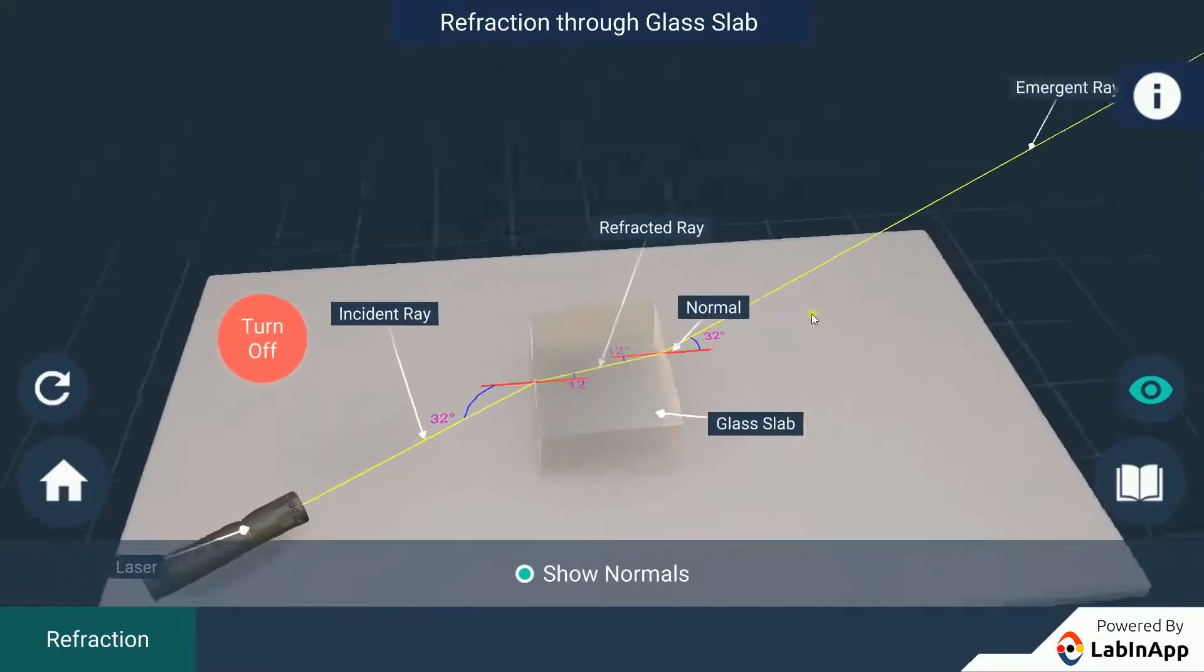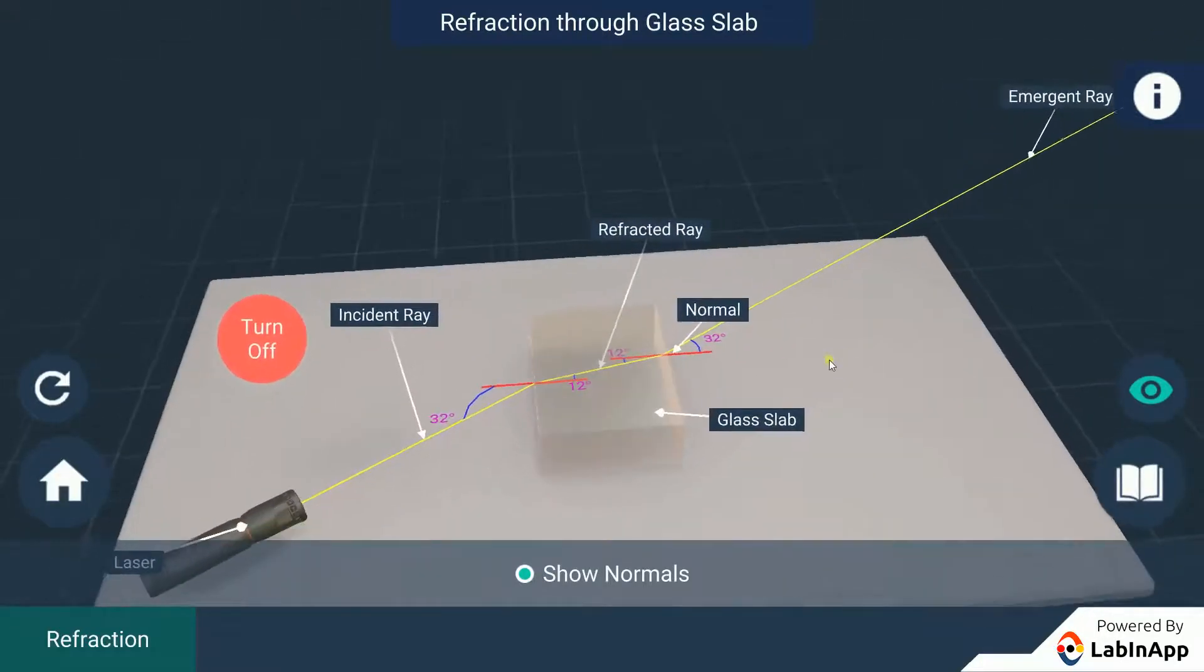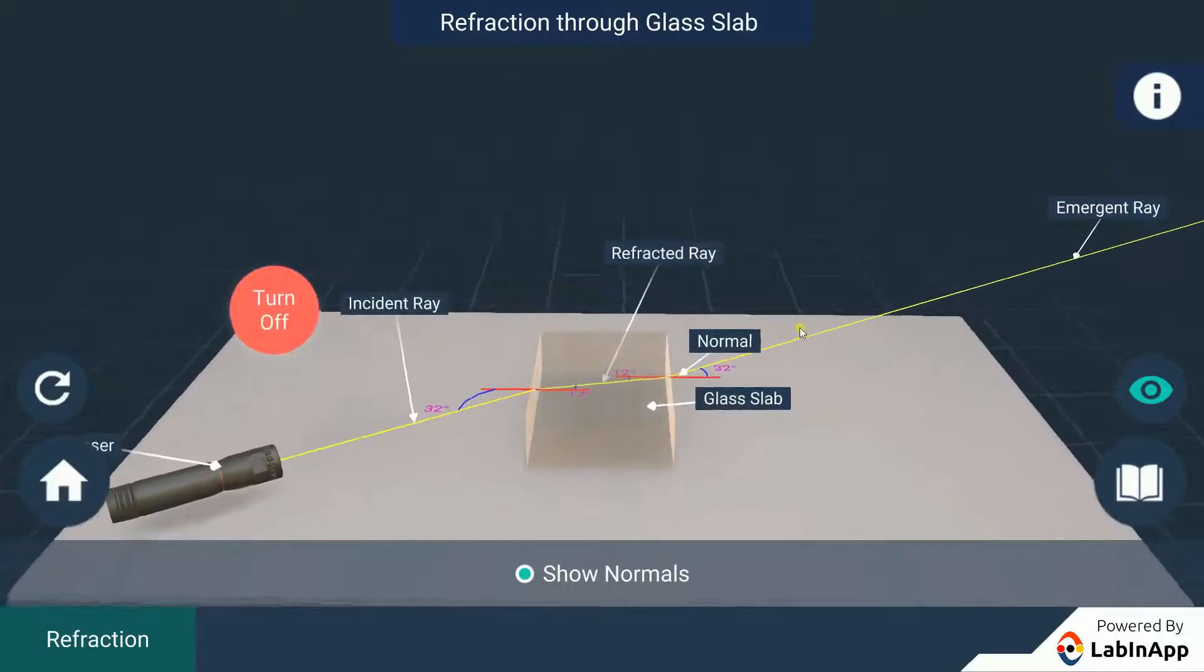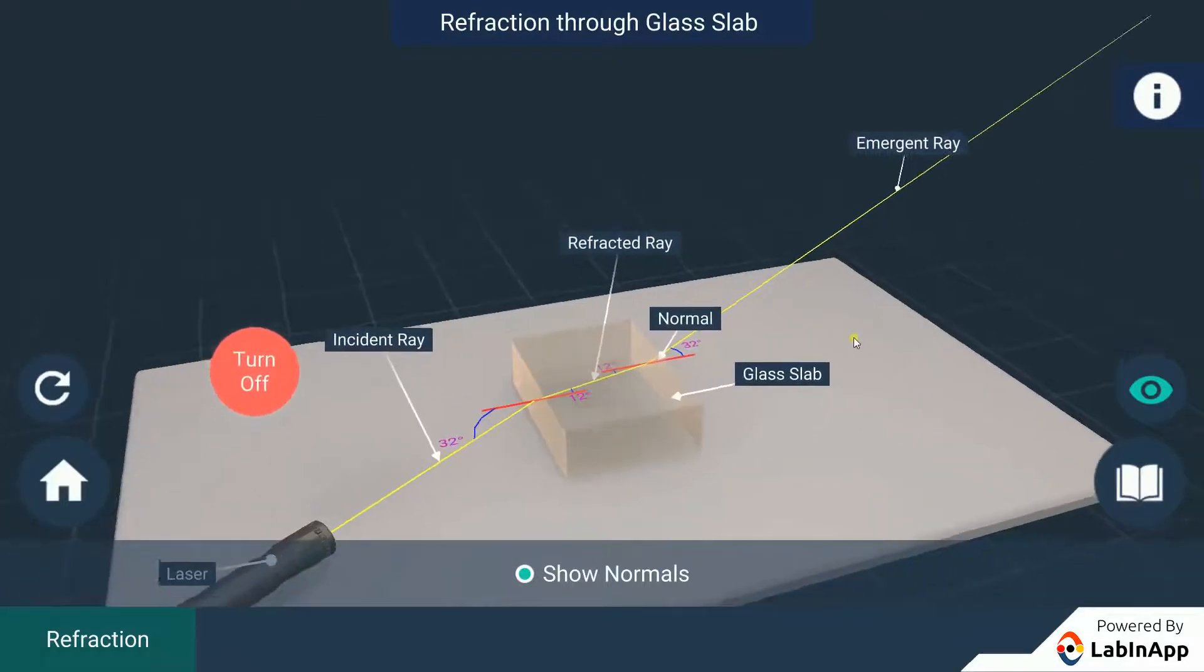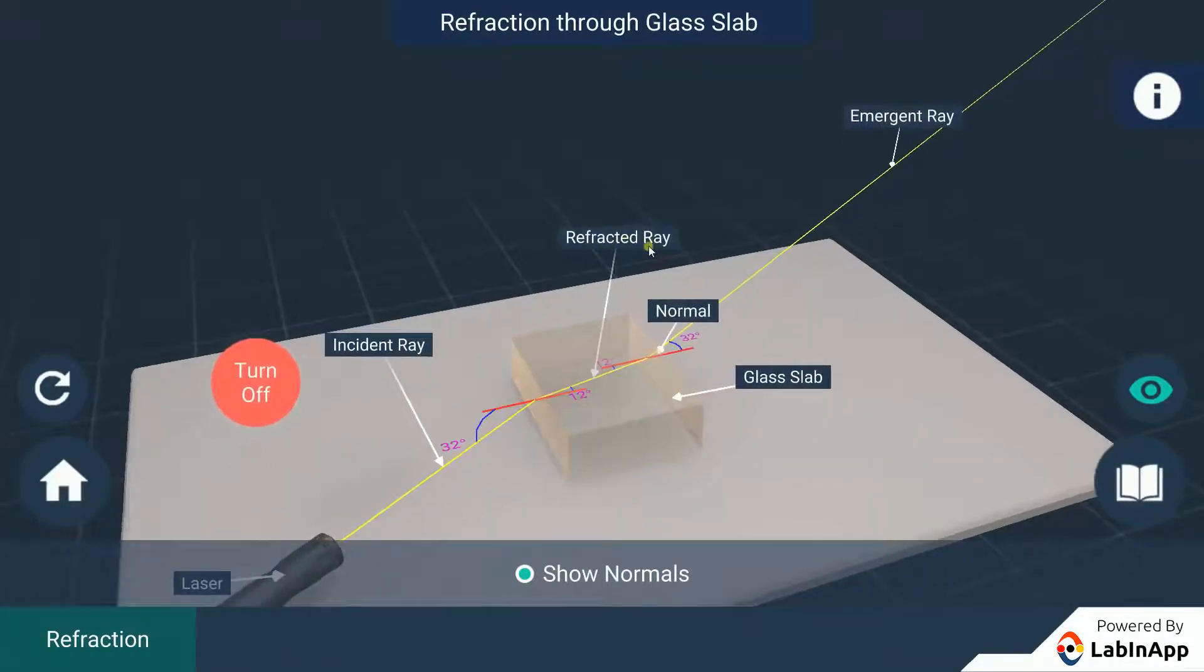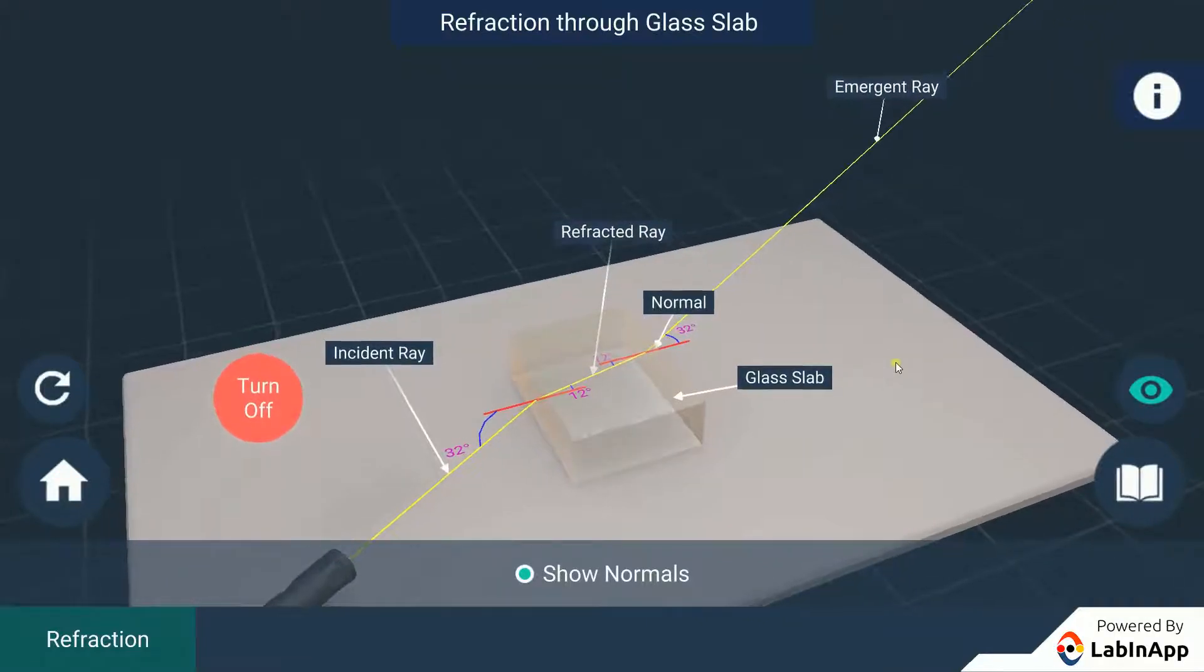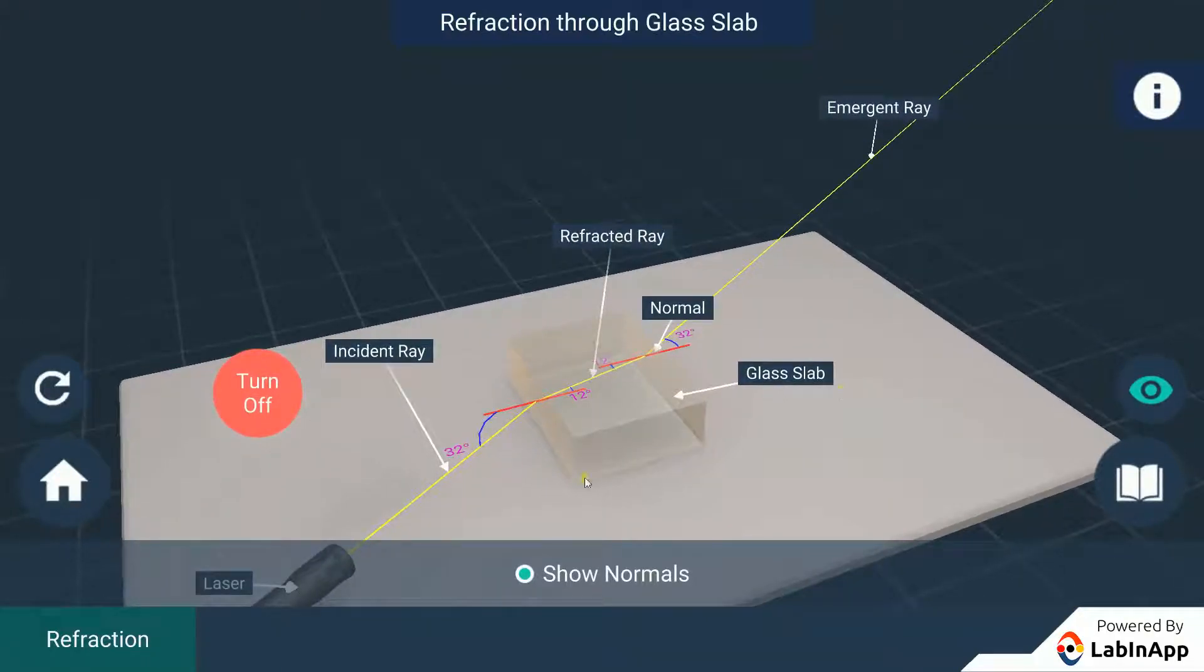2. The ratio of sine of angle of incidence to the sine of angle of refraction is a constant for the light of a given color and for the given pair of media. This law is also known as Snell's law of refraction.